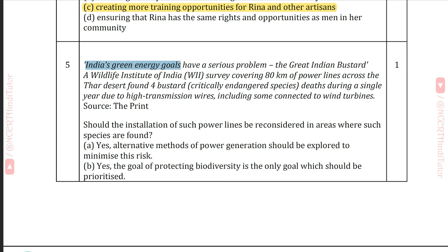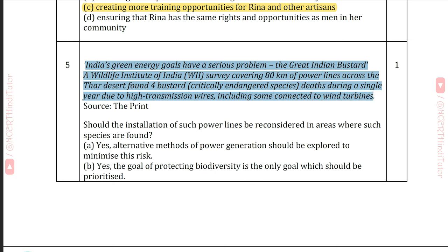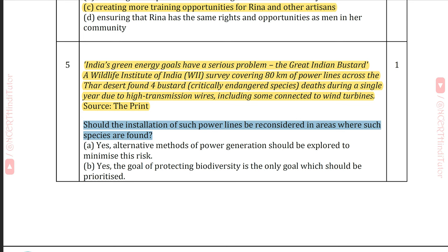Question 5: India's green energy goals have a serious problem — the Great Indian Bustard. A Wildlife Institute of India survey covering 80 km of power lines across the Thar Desert found four bustard critically endangered species deaths during a single year due to high transmission wires, including some connected to wind turbines. Should the installation of such power lines be reconsidered in areas where such species are found? Answer C: Alternative methods of power generation should be explored to minimize this risk.